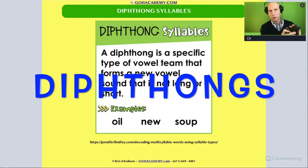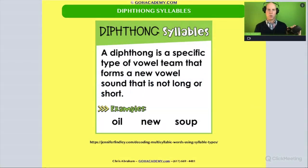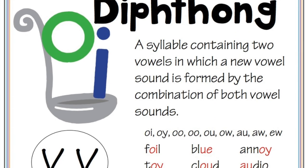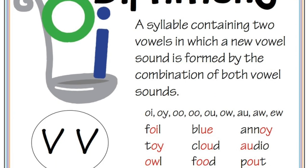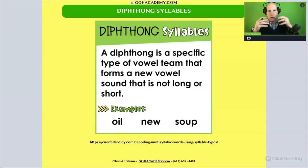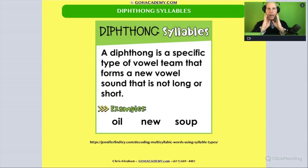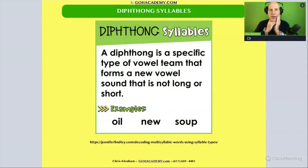A diphthong is when we have two sounds that are blended together. In the word 'oil,' if you touch your throat, jaw, and tongue and say 'oi,' you start off at one vowel and then move to the second vowel — they blend into each other and there's movement.